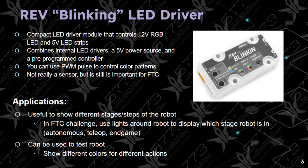It's not really a sensor, but it's still important for FTC because it is useful to show different stages or steps of a robot. For example, in an FTC challenge, it can use lights around the robot to display which state the robot is in — such as autonomous, tele-op, or endgame. It can also be used to test a robot and show different colors for different actions.